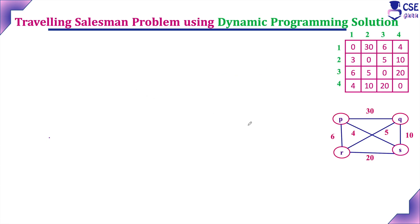The function we are going to use throughout the Traveling Salesman Problem is: g(i, S) = minimum over j belonging to S of { c(i,j) + g(j, S minus {j}) }. This function will be implemented at every level of the state space tree.